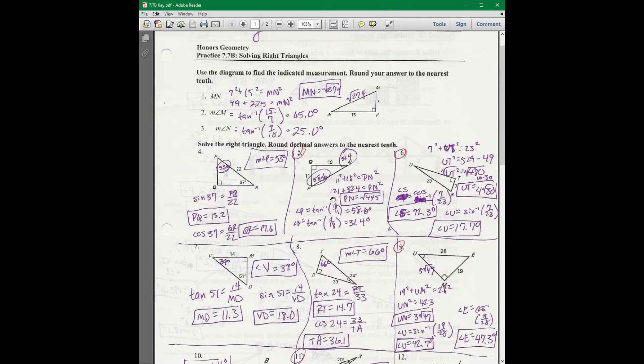So in number 5 here, I used the Pythagorean theorem to find the length of PN, which was the square root of 445. Leave it that way. Okay, to find angle P, I said, well, I'm given opposite over adjacent, so that's tangent.